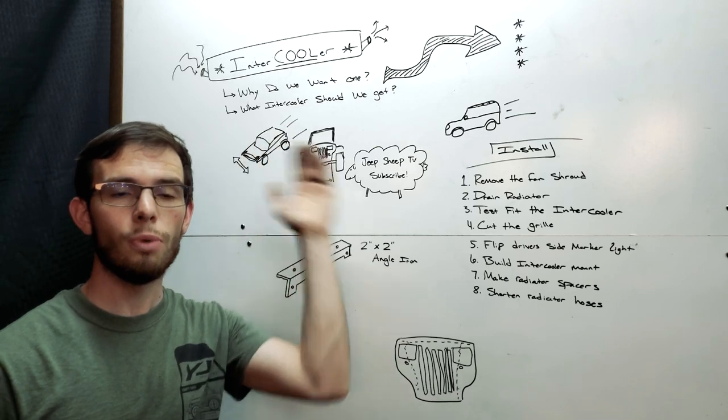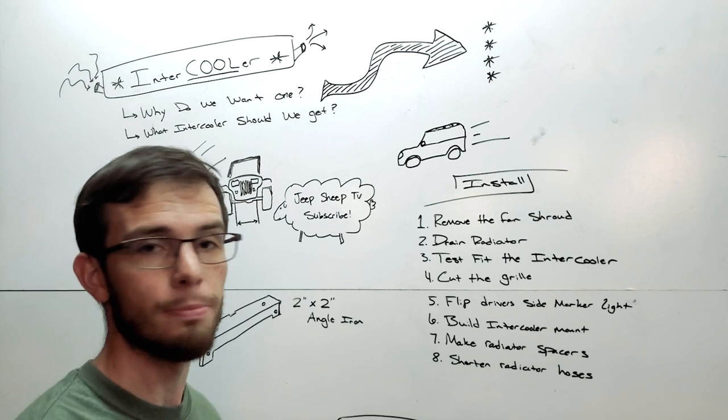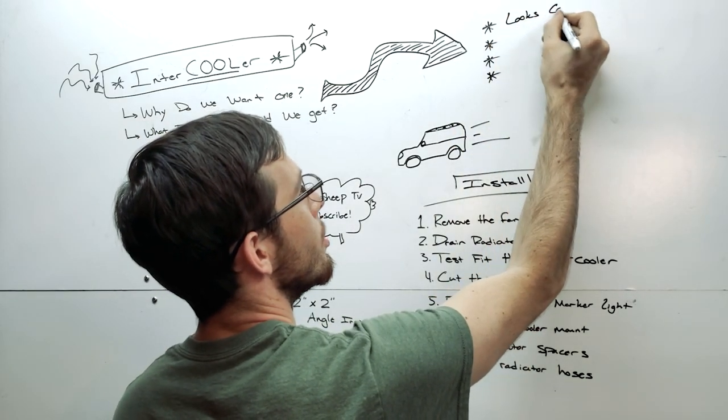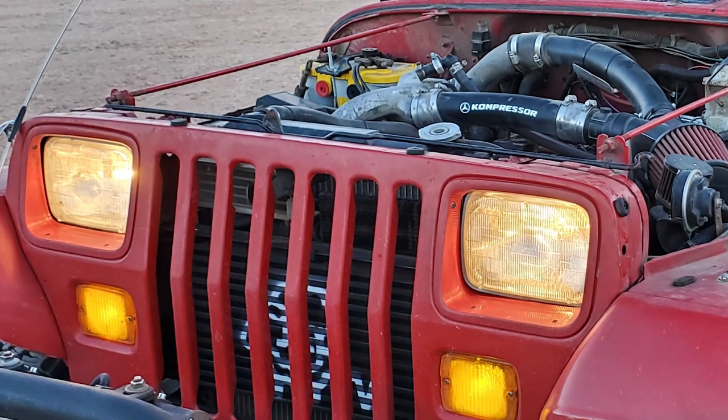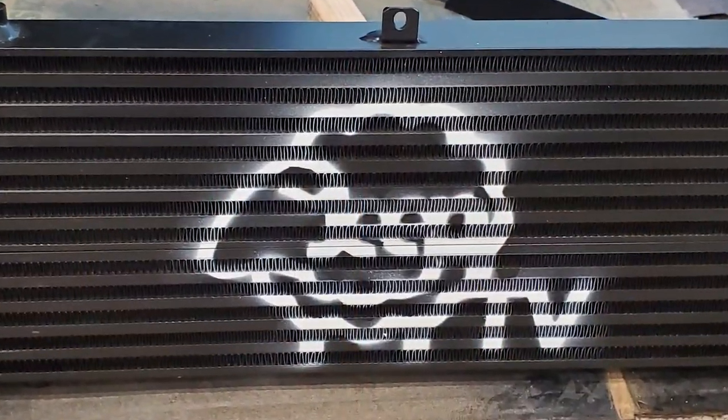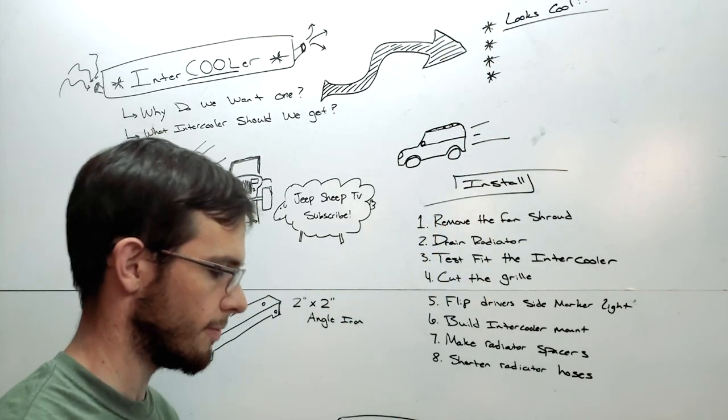Why do we want an intercooler in our Jeep? First one, and this one is probably the most important one, is that it looks cool. Yeah, it looks cool. It looks awesome to have an intercooler. It tells the world that you're doing something that's not normal and you can spray paint your logo on it. So it looks cool. So number one, it looks cool. That's why we have an intercooler.